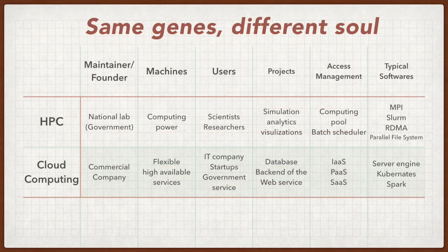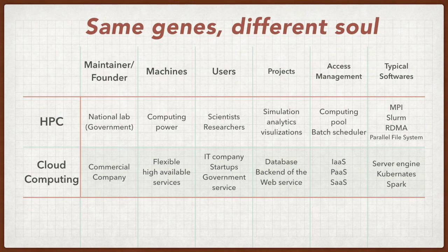Cloud computing and HPC share the same genes but different sorts. For example, both are built on CPUs and GPUs, with file systems and data storage services serving different users and different projects. HPC is maintained by national labs and funded by the government, while cloud computing is for commercial use. For users, HPC aims to provide high-performance computing, while cloud computing focuses on flexible and highly available services. HPC serves scientists, while cloud computing serves different people and startup companies. A summary table shows much more detail and essentially summarizes the key points of this video.